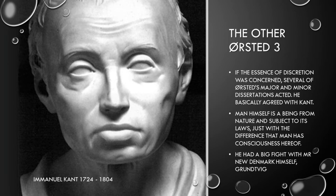This other Ørsted was also a big believer and fan of Immanuel Kant. He believed in the essence of discretion, and several of Ørsted's major and minor decisions reflected that — he agreed with Kant in most of it. The basic thing is that man himself is a part of nature. At that time, man was regarded as a product of God — a divine influence put us here, we were above nature. Nature was a product of God, but man came along as a result of a direct link to God. We were made in God's image, so naturally, since God is not a tree, we must be above everything else.